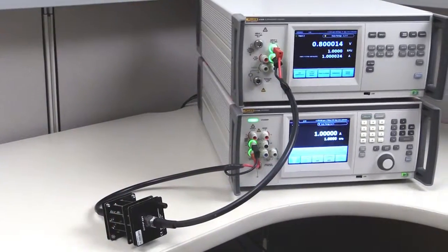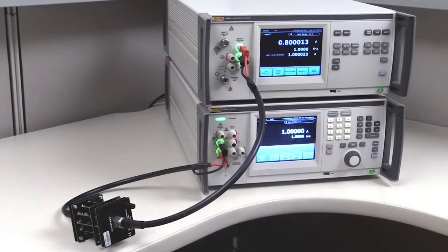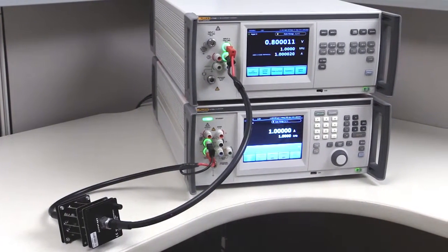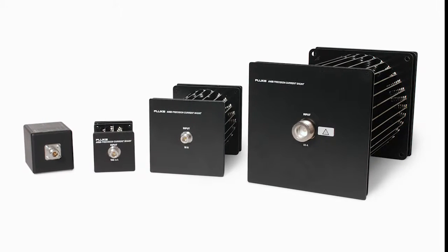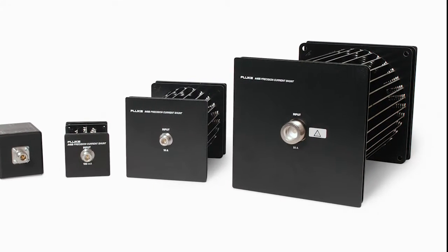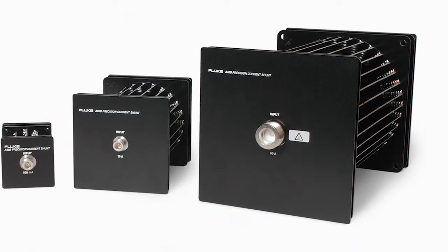The second major improvement is the 5790B's ability to make direct, absolute or relative current measurements with current shunts without needing to make any calculations. The 5790B is optimized for use with the Fluke A40B current shunts up to 100 amps to make absolute and relative measurements.